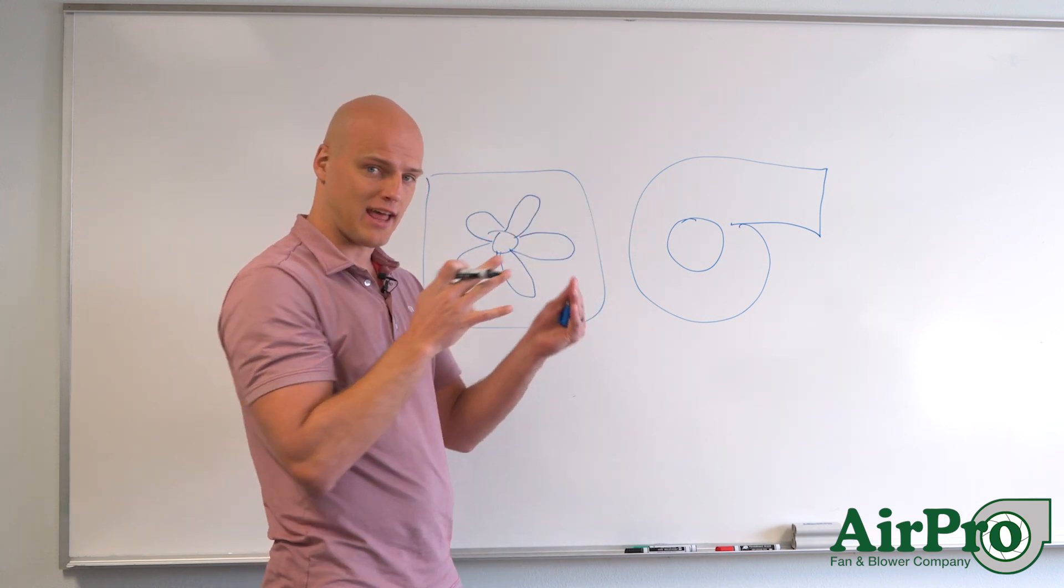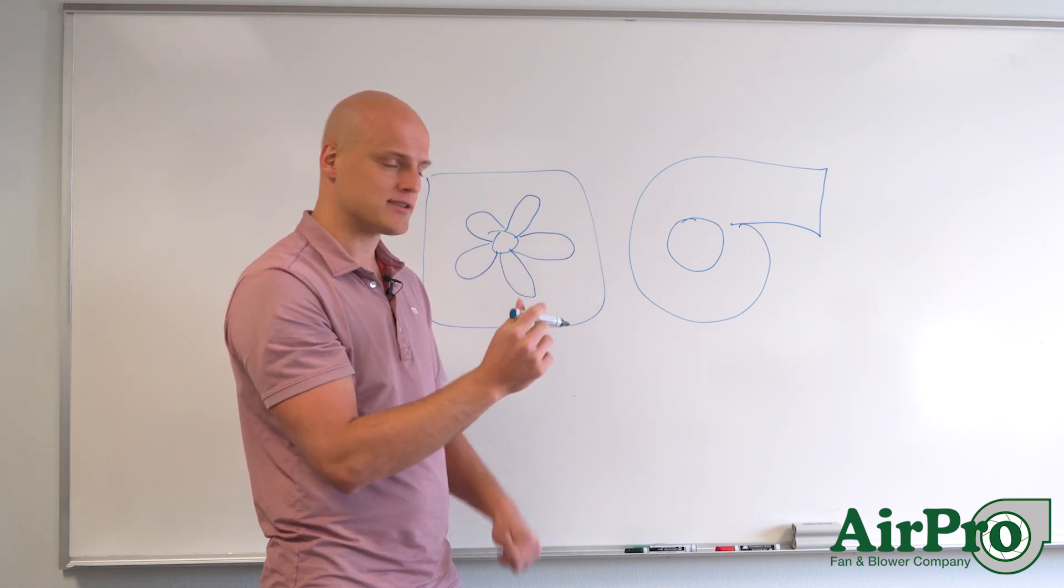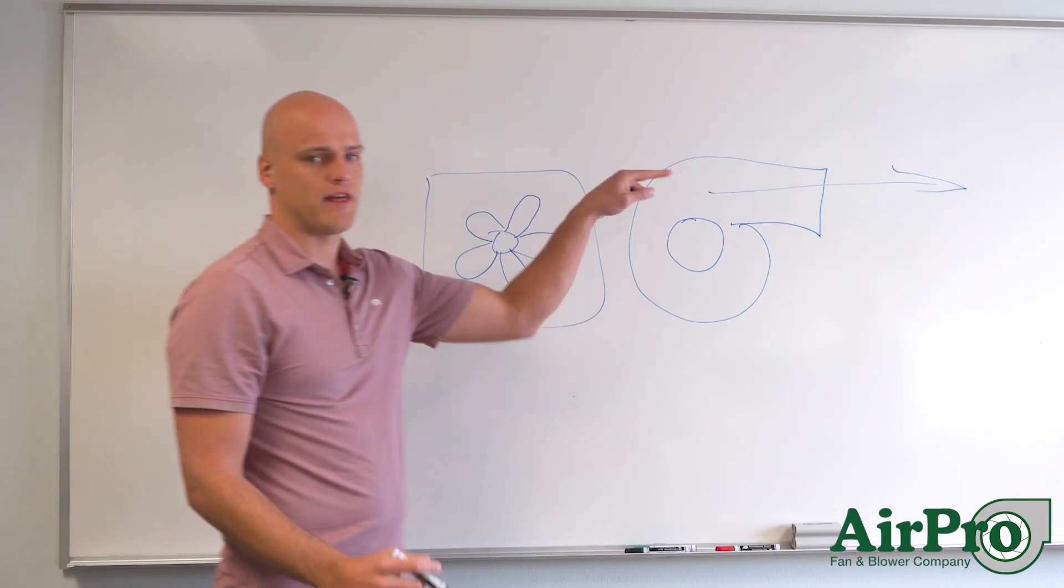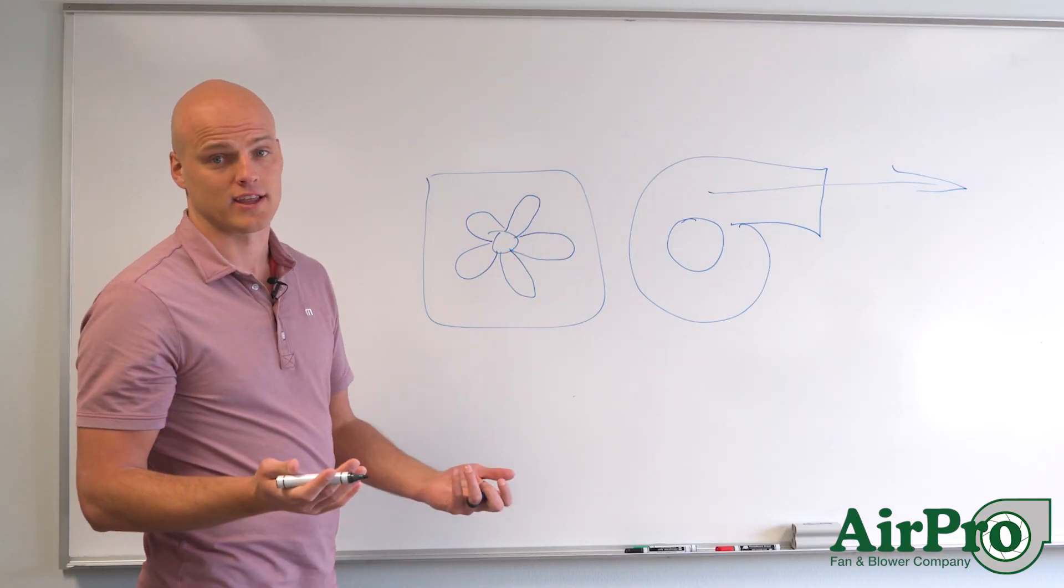So the plane that it exits the fan is perpendicular to the plane that it came into the fan. So it's going to blow out that way instead of passing through in the same direction like an axial fan.